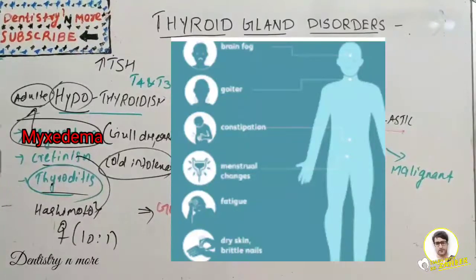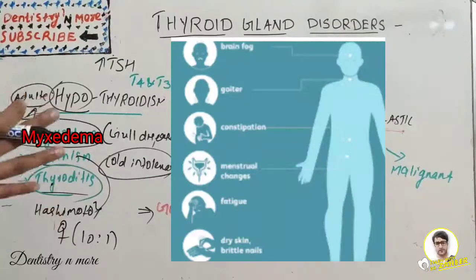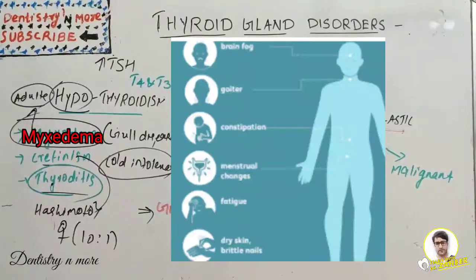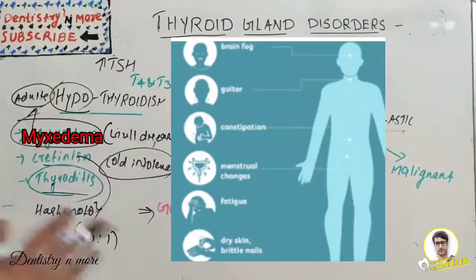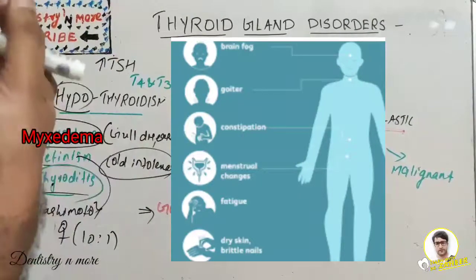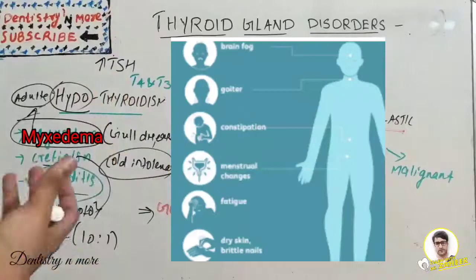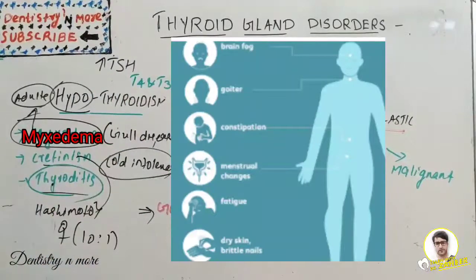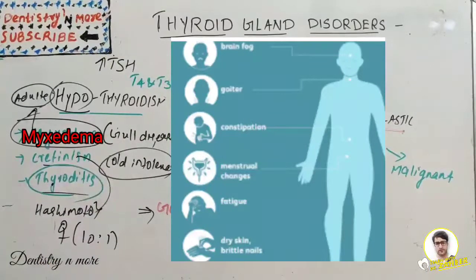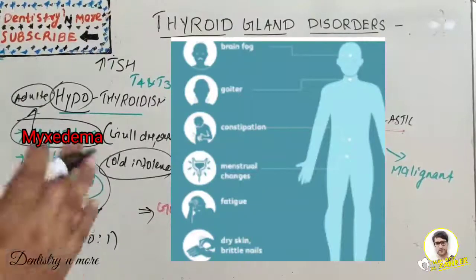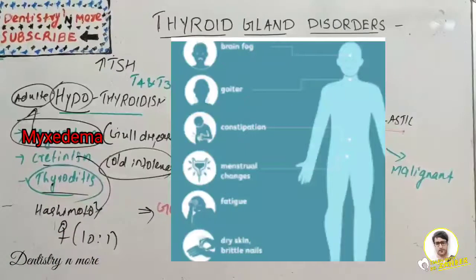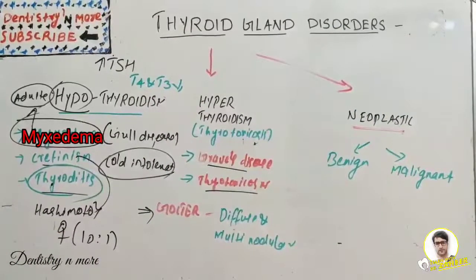Clinically, there is progressive depletion of thyroid cells, replaced by mononuclear cells and fibrosis. It comes to clinical attention as painless enlargement of the thyroid with some degree of hypothyroidism. The gland is slowly replaced by fibrous tissue and mononuclear cells. The patient is at risk of developing other autoimmune diseases but does not have any increased risk of malignancy with Hashimoto's thyroiditis.